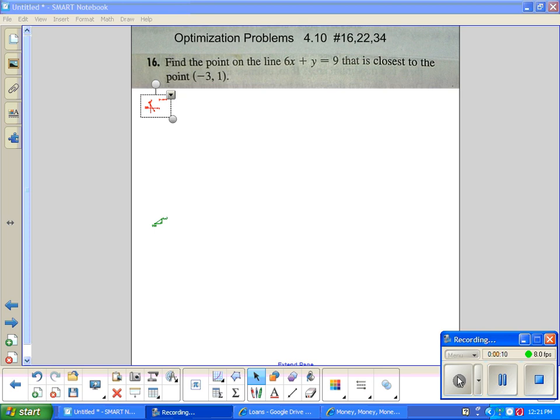This is out of Stewart's 5B Calculus textbook. Find the point on the line 6x plus y equals 9 that's closest to the point negative 3, 1. This could be done with pre-calculus. We know perpendicular lines have negative reciprocal slopes. You can figure out the slope through that point, find the intersect, and then find the distance. But it's a lot easier using calculus.